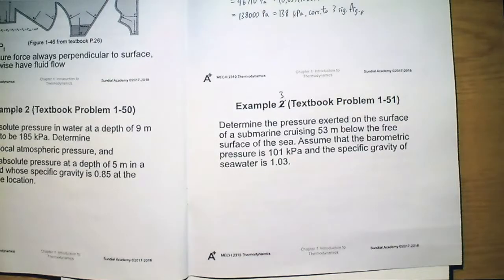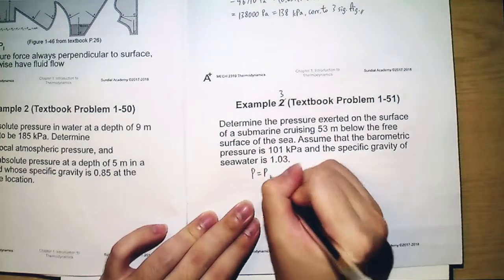So let's see the solution. Here, we again use the relationship we have got before, that is P equal to P_atm plus ρgh.